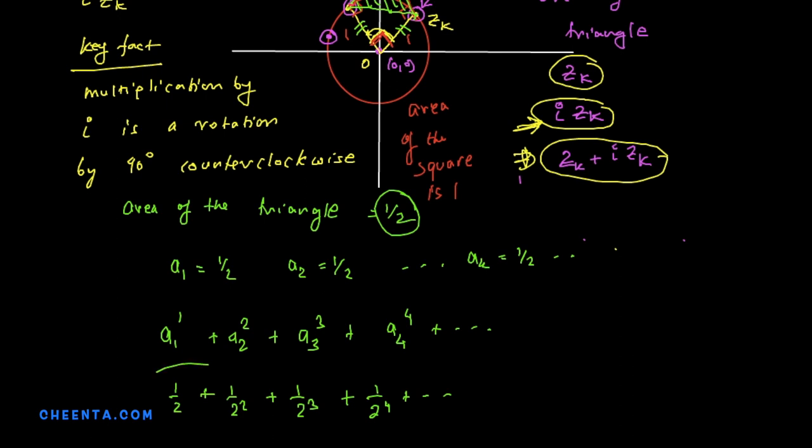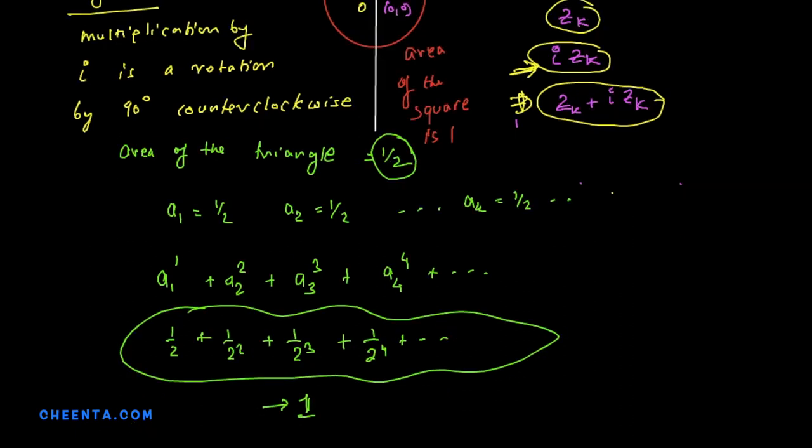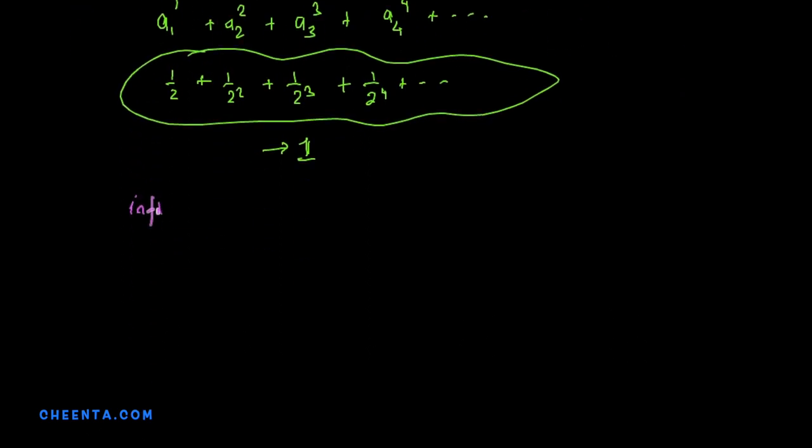We know that this particular series is an infinite geometric series and it always converges no matter what point you choose. So this is always converging towards 1. And if you do not know why this is true, you can use for example the infinite gp summation formula. But really you have to understand what convergence of a series means and you would know that this is converging towards 1.